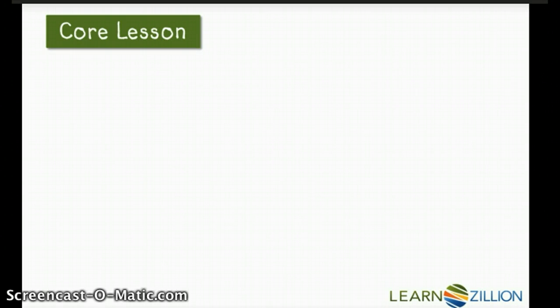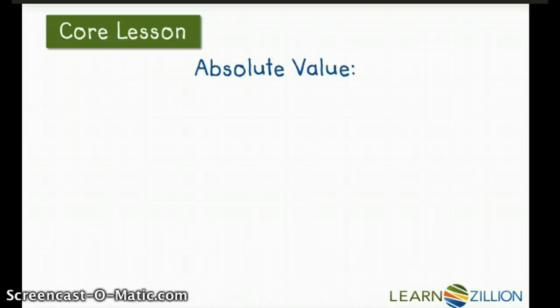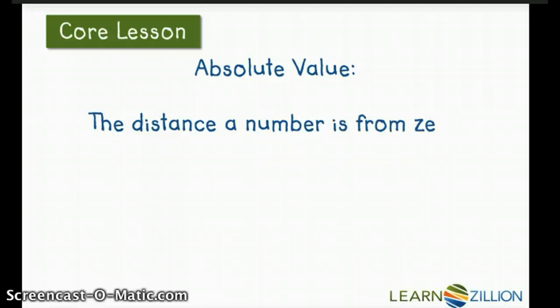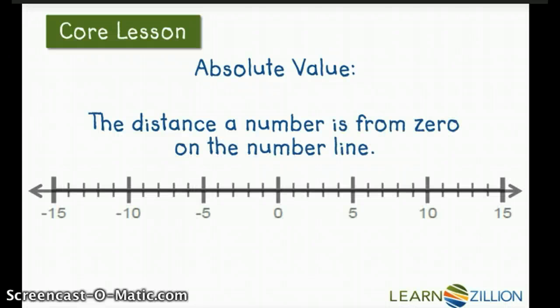Alright, let's first look at the definition of absolute value. Absolute value is the distance a number is from 0 on the number line. So it's talking about distance.